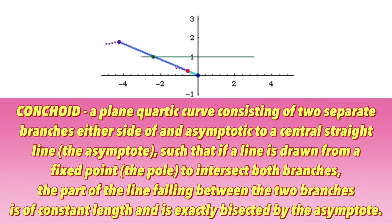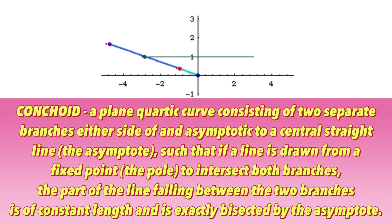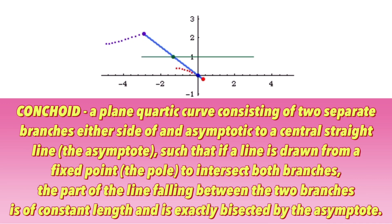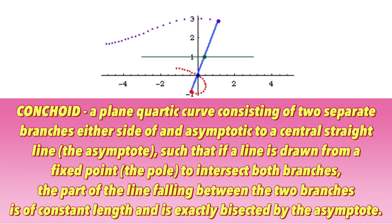Now let's have the mathematical definition of a conchoid. A conchoid is a plane quartic curve consisting of two separate branches either side of an asymptote to a central straight line, such that if a line is drawn from a fixed point — the pole — to intersect both branches, the part of the line falling between the two branches is of constant length and exactly bisects the asymptote.